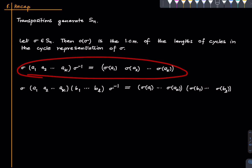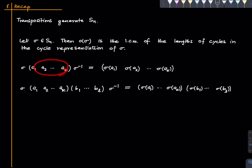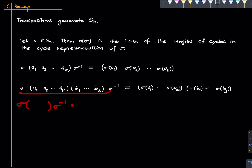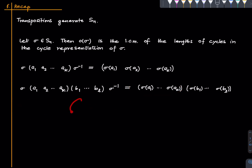We have the simple fact that if you conjugate a k-cycle by some permutation sigma, you get another k-cycle. This is called the conjugate of that. Similarly, if you take a conjugate of a product of cycles by sigma, you get the corresponding result — this follows from the previous one because you can write it as sigma times the first k-cycle times the second l-cycle times sigma inverse, inserting identity in the middle.